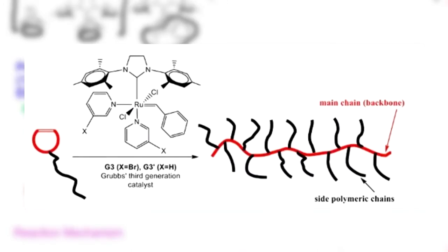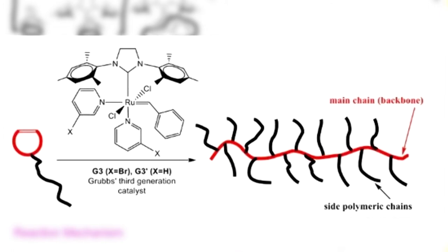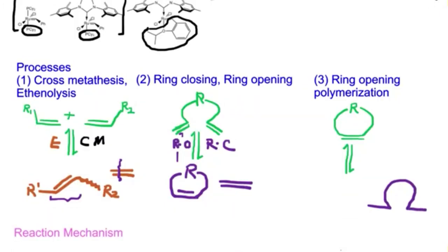Finally, we have ring opening metathesis polymerization (ROMP), where a polymer is actually created. In this case, a strained ring opens and forms more of itself, propagating from left to right or right to left, building up a polymer chain.